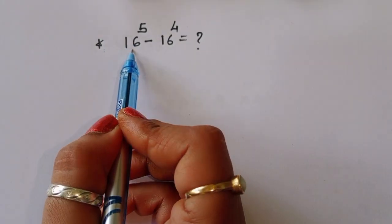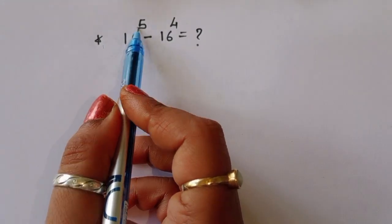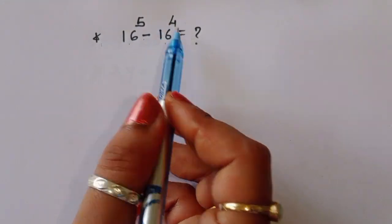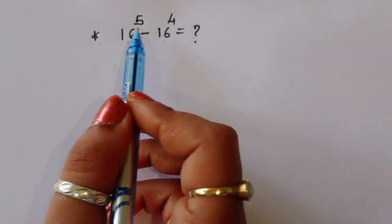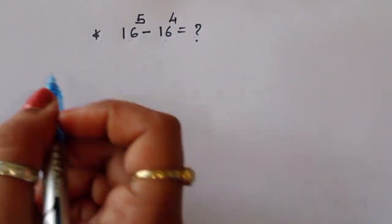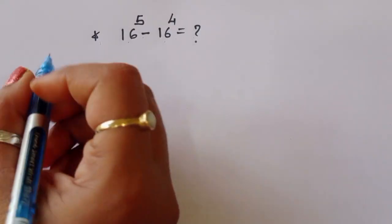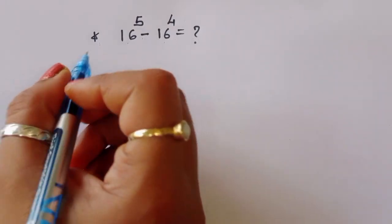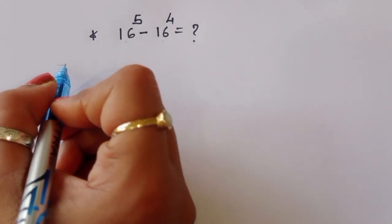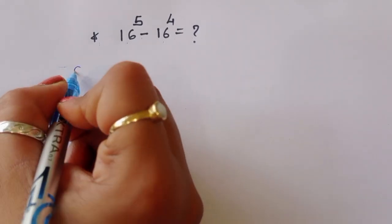The question is: 16 power 5 minus 16 power 4 is equal to what? We have to find out the value of this term. Let's see the solution.